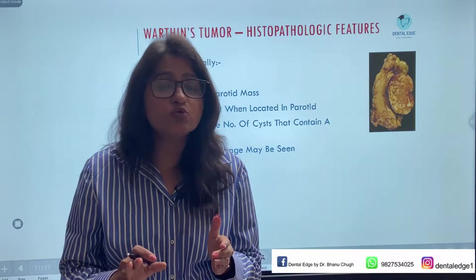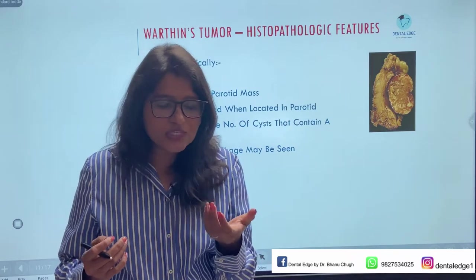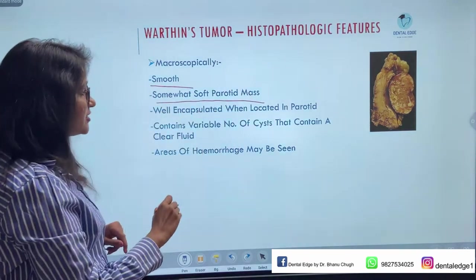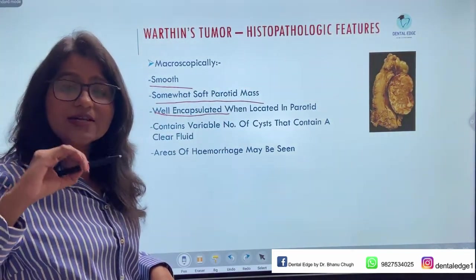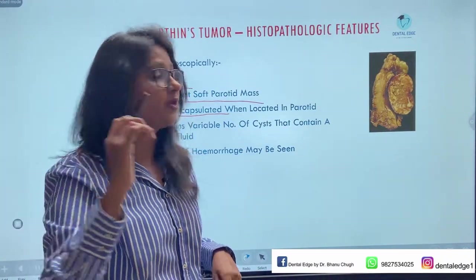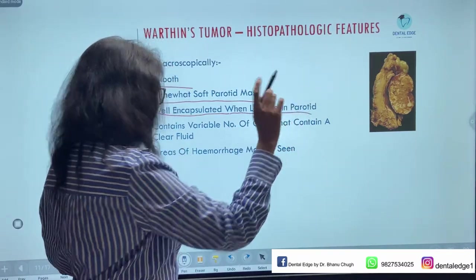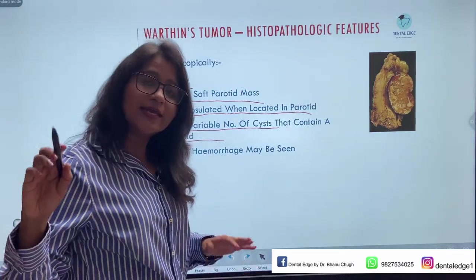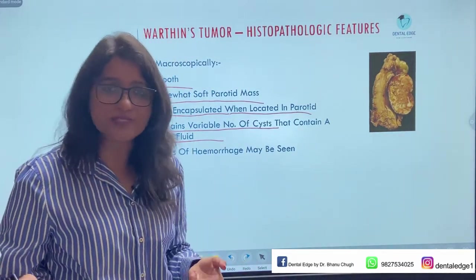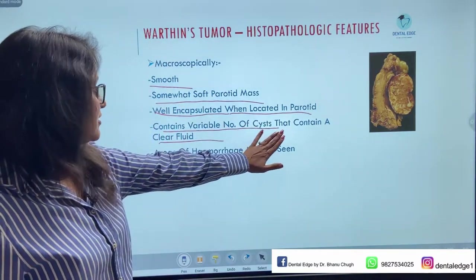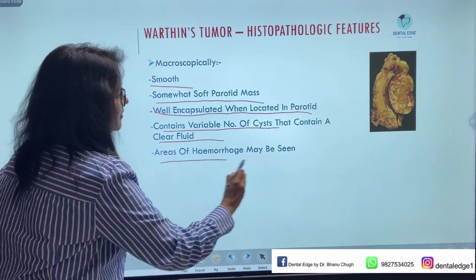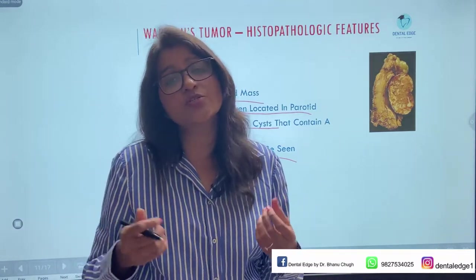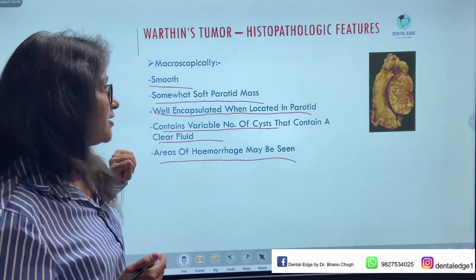Regarding macroscopic features: when the removed tumor is examined, it appears as a smooth, somewhat soft parotid mass that is well encapsulated, making it easy to remove. It contains a variable number of cysts filled with clear fluid. Areas of hemorrhage may also be seen. So macroscopically it presents as a soft, well-encapsulated parotid mass with variable numbers of cyst-like structures.